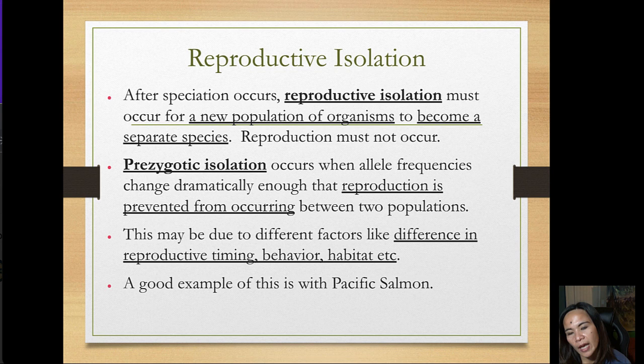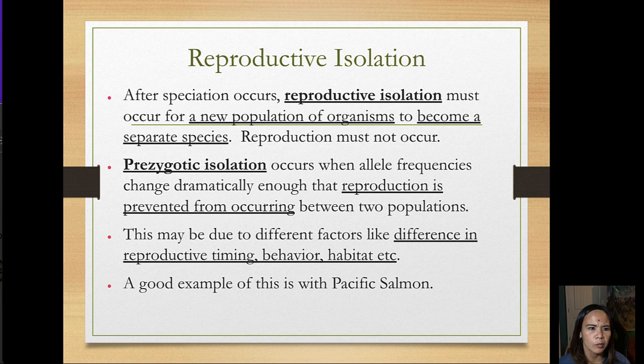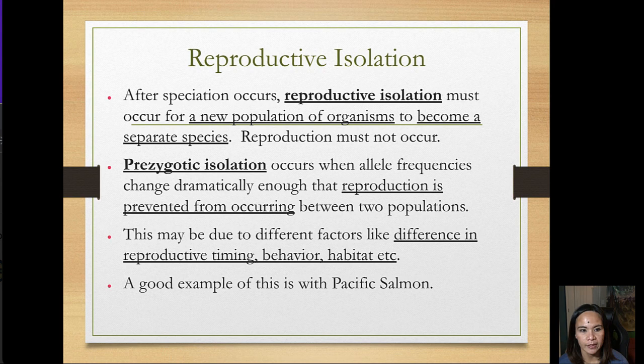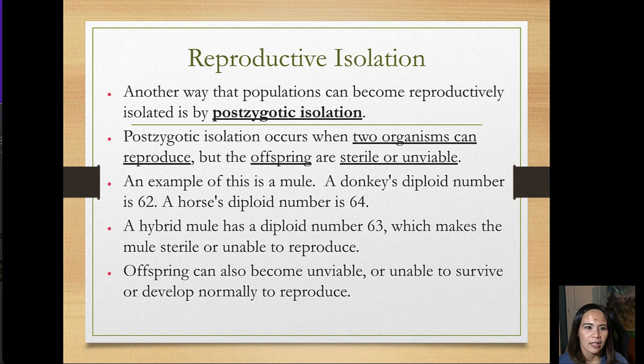After speciation occurs, reproductive isolation must occur for a new population to become a separate species. One type is pre-zygotic isolation, which occurs when allele frequencies change enough that reproduction is prevented between two populations. This may be due to differences in reproductive timing, behavior, or habitat — a good example is the Pacific salmon.